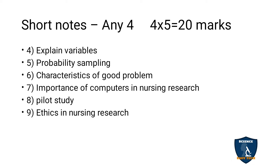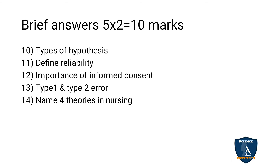Out of these 6, you have to answer only 4 — 4 into 5 is equal to 20 marks. Next, Brief Answers — there is no choice; you have to answer all 5 questions. Each question carries 2 marks, so 5 into 2 is equal to 10 marks. 10th question: Types of Hypothesis. 11th question: Define Reliability. 12th question: Importance of Informed Consent. 13th question: Type 1 and Type 2 Error. 14th question: Name 4 Theories in Nursing.